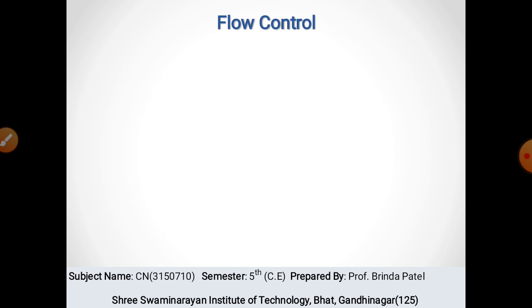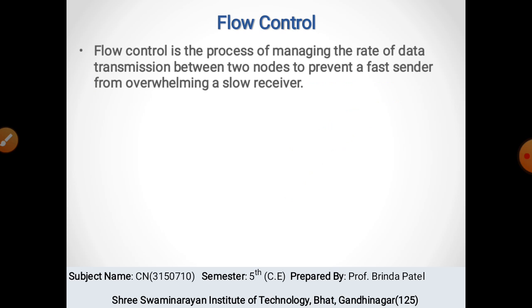First we will see about flow control. Flow control is the process of managing the rate of data transmission between two nodes to prevent a fast sender from overwhelming a slow receiver. Without flow control, packets can be lost because the sender sends as many packets as it wants but the receiver cannot keep up — the sender is fast and the receiver is slow.